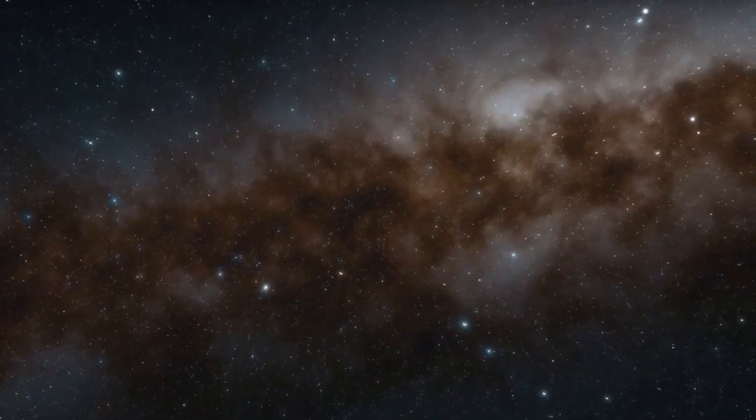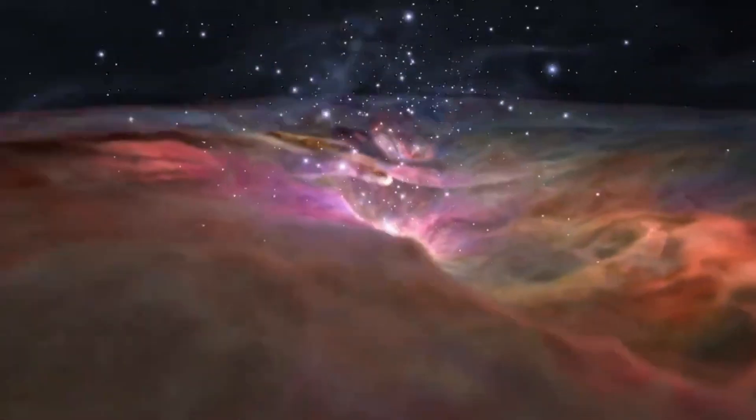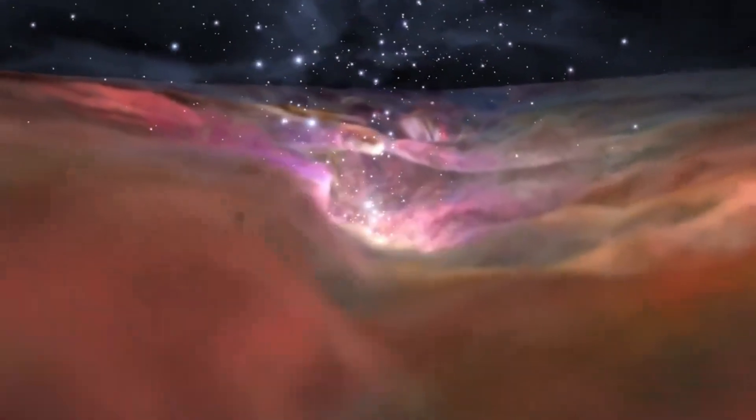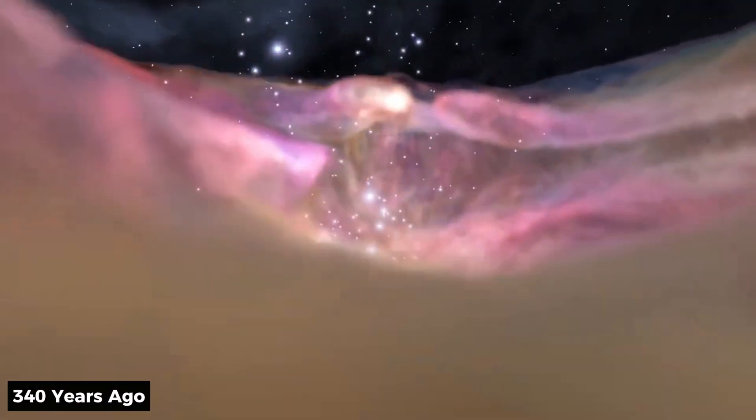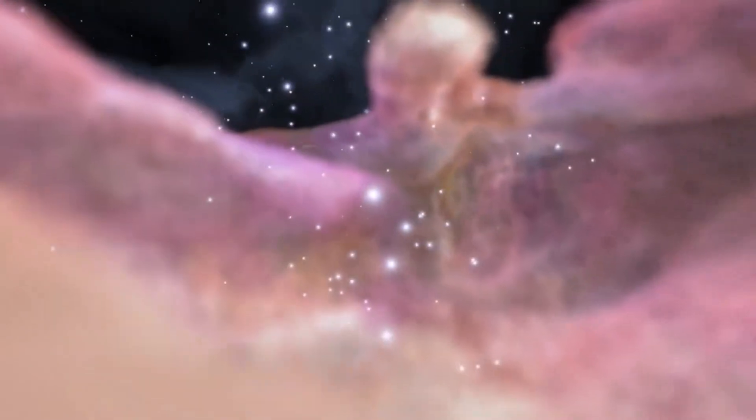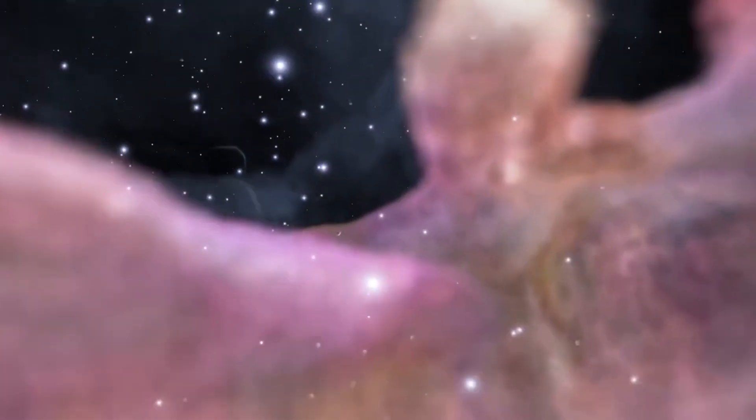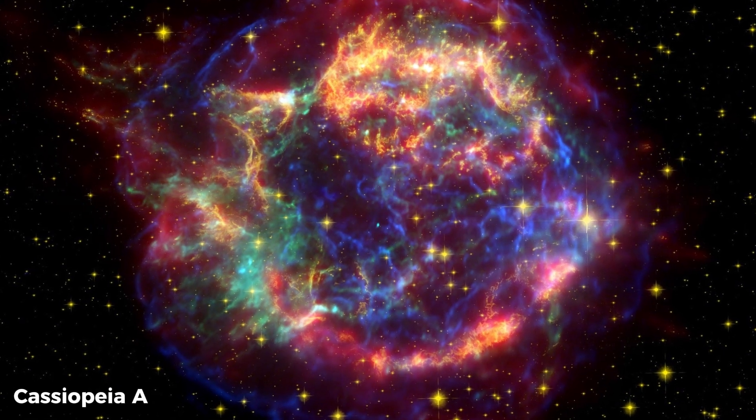Today on Universe Revealed, we will journey back in time to witness the aftermath of a spectacular demise that took place 340 years ago, one that echoes through the corridors of time and is known by the name of Cassiopeia A.